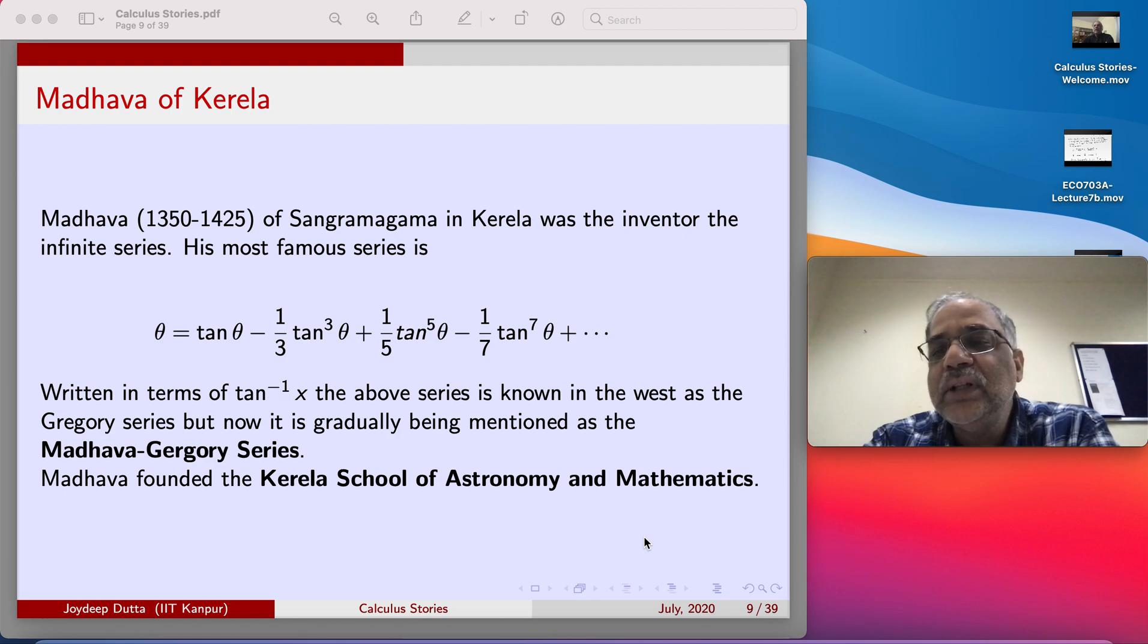So write 1 plus x square as 1 plus x square to the power minus 1 and then open it as a negative binomial. And once you open that as a negative binomial and then integrate term by term.